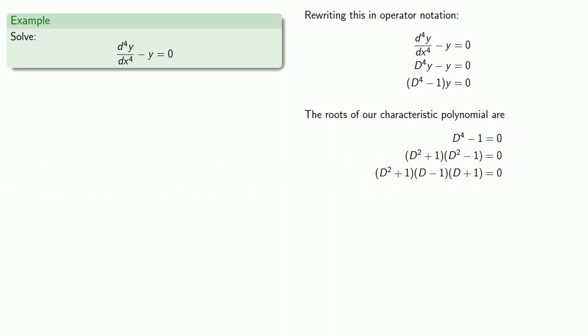And again, this is the one case out of billions where we can actually solve this problem algebraically. If we do that, we get four solutions: plus or minus 1, plus or minus i.